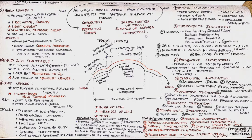Now we will see the types of contact lenses based on the nature of material. Based on the nature of the material, they are classified into three types: hard lenses, rigid gas permeable lenses, and soft lenses. For all three types we will study under four headings: the material they are made of, the features of the lens, the diameter of the lens, and their advantages and disadvantages.